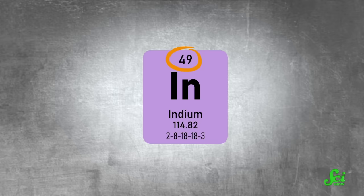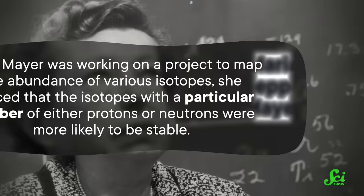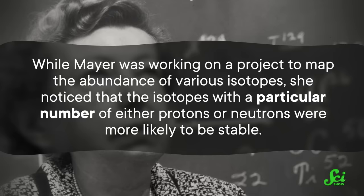But even within the Valley of Stability, there are some weird patterns. Why does indium, atomic number 49, only have two stable isotopes, while its periodic table neighbor tin has a whopping 10? Back in the 1940s, this quirk did not go unnoticed by a chemist named Maria Goeppert Mayer. While working on a project to map the abundance of various isotopes, she noticed that isotopes with a particular number of either protons or neutrons were more likely to be stable.